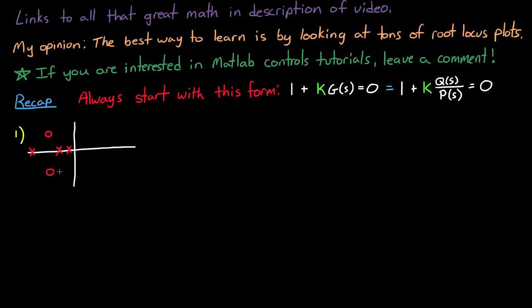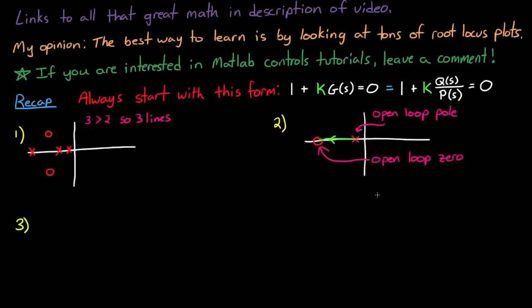So now the first rule states that there are as many lines as the degree of q or p, whichever one is greater. So here I've drawn three poles and two zeros. And since three is greater than two, then you know that there's going to be three lines. And rule two states that the lines will start at a pole of g of s and go to a zero of g of s.